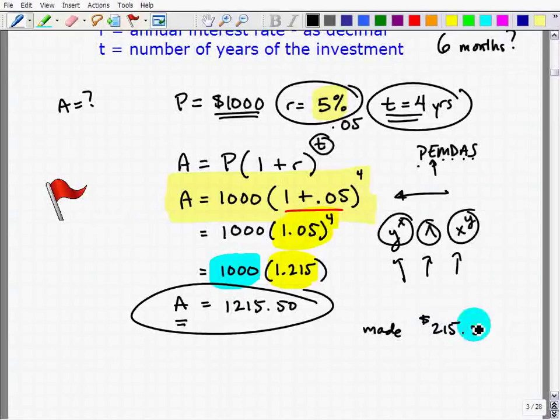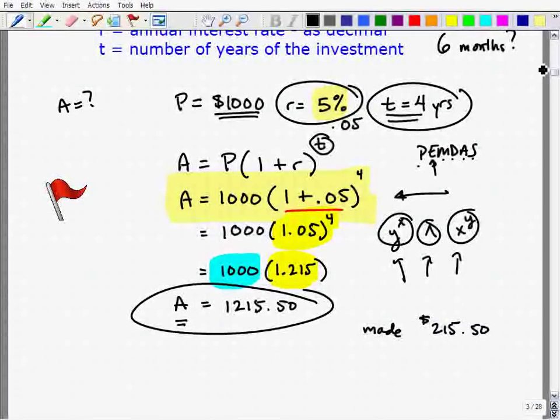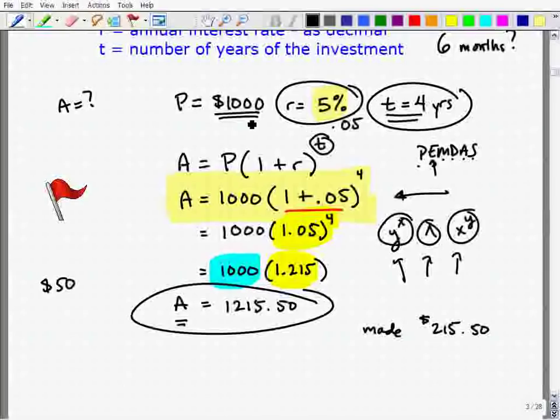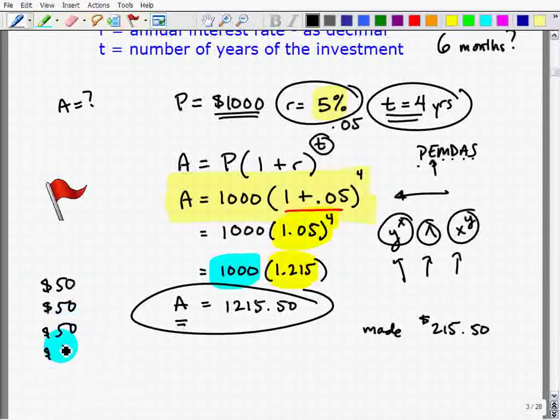Now how much would we have made if this was simple interest? Let's figure out what 5%, 0.05 times 1,000, is $50. So we would have made $50 every year for four years if this was simple interest. So it would have been $50 the first year, $50 the second year, third year, and then the fourth year.